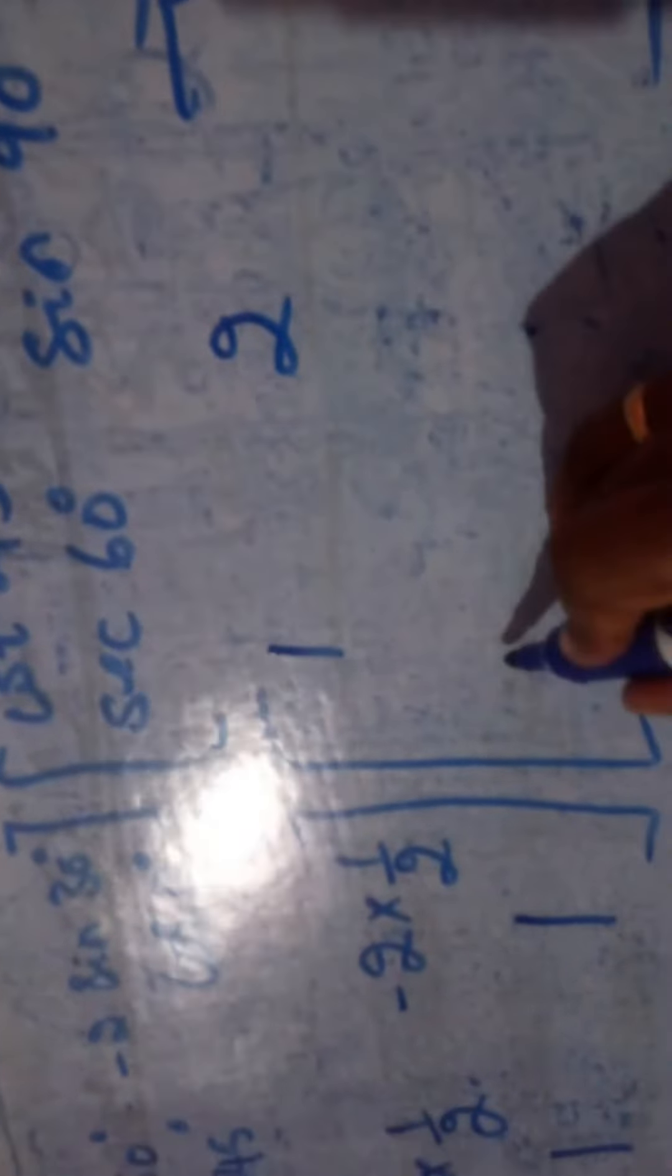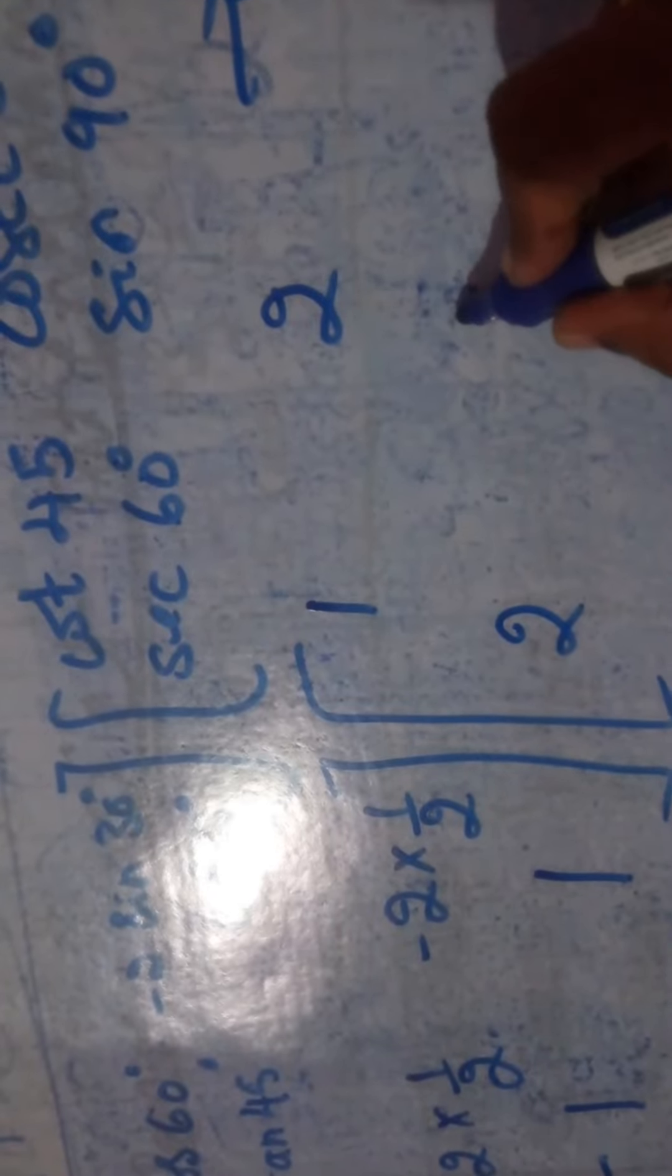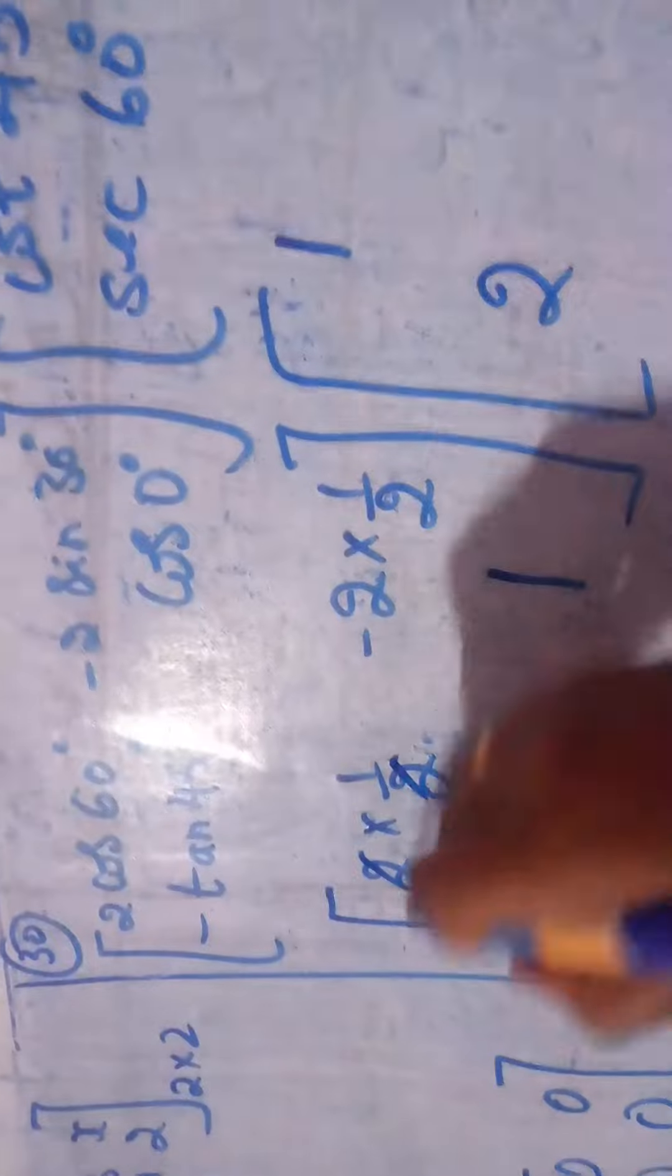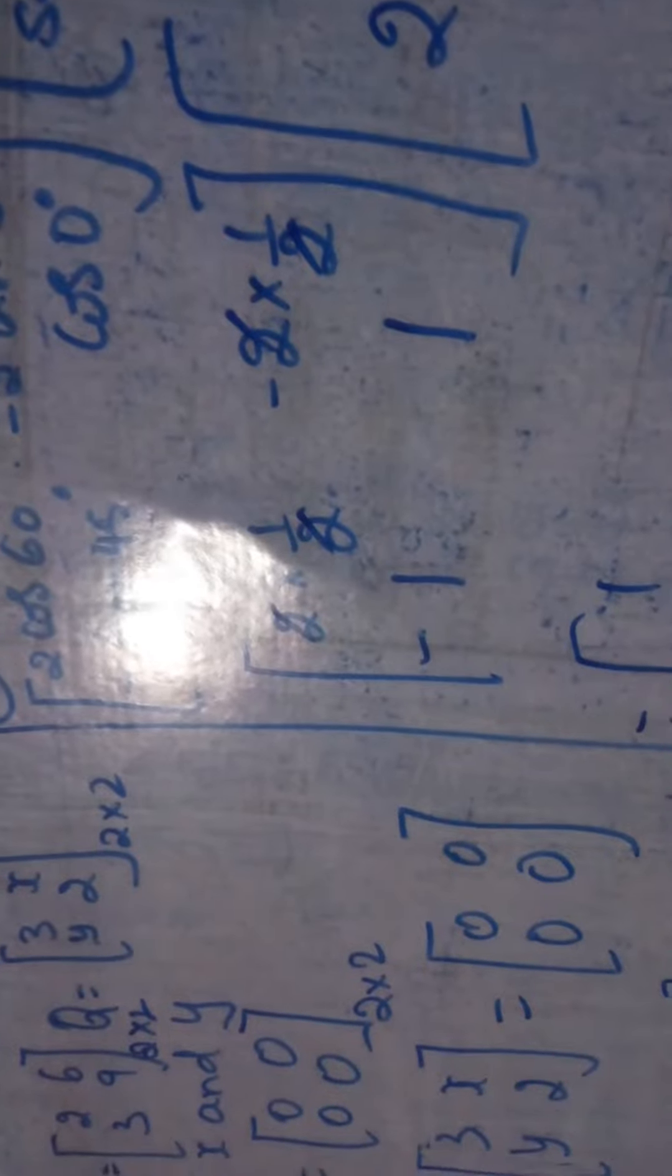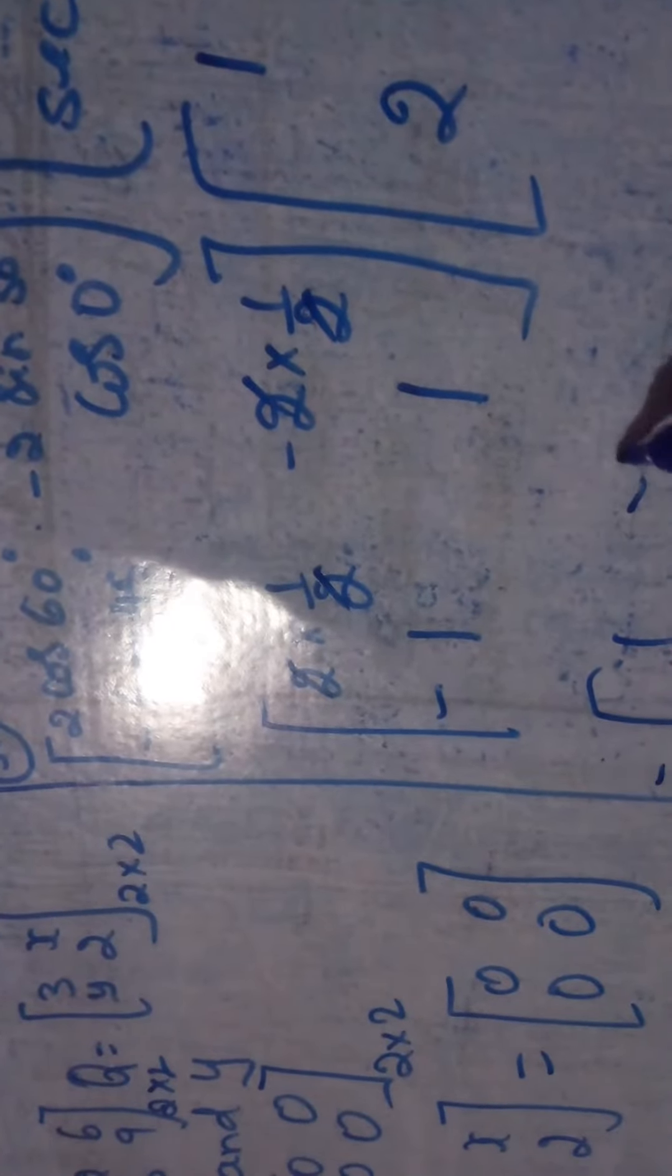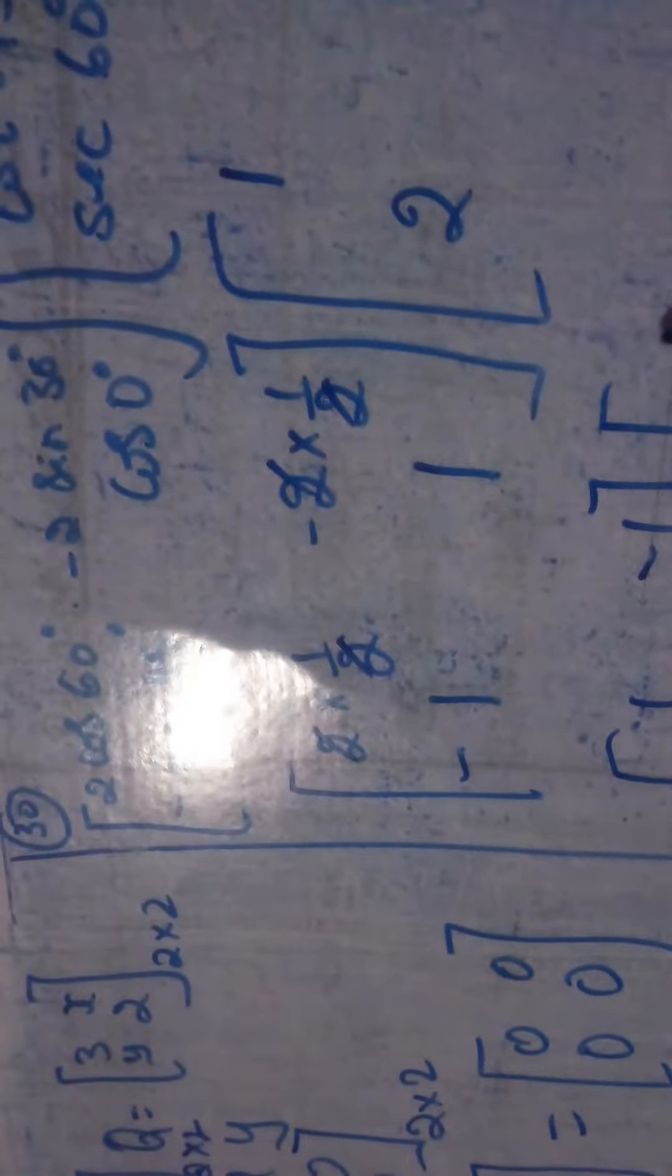And secant 60 is 2. Sine 90 is 1. Now I can cancel this 2 and 2, this 2 and 2. So finally I am getting 1 minus 1 minus 1 plus 1, and here I am getting it as 1, 2, 2, 1. Now I need to multiply these two.